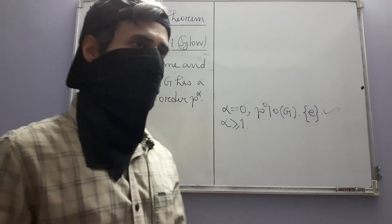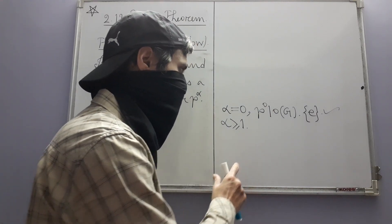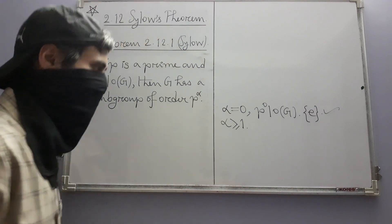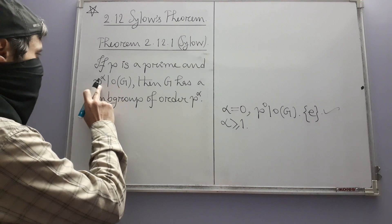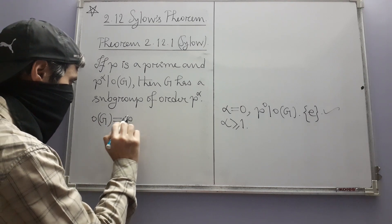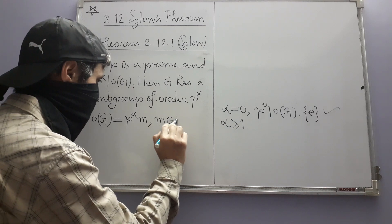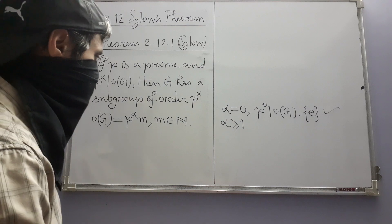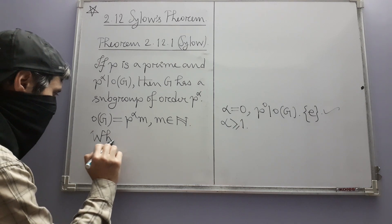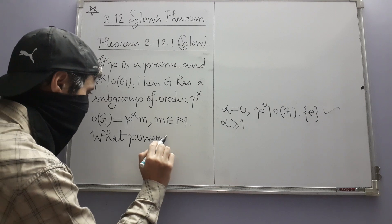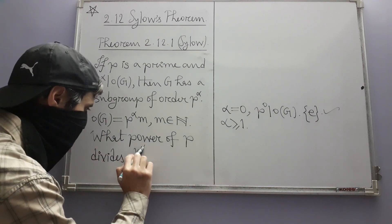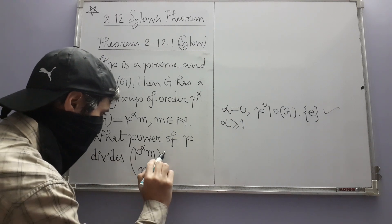Because the proof is combinatorial in nature, at the beginning of the proof the author considers a binomial coefficient and says something about it. Since p^α divides the order of G, the order is of the form p^α · m for some positive integer m. The question the author asks is: what power of p divides the binomial coefficient C(p^α · m, p^α)?